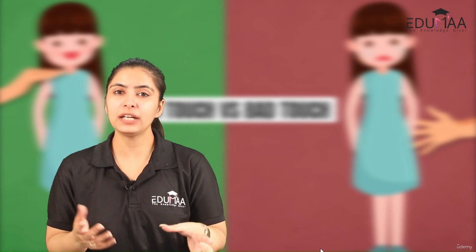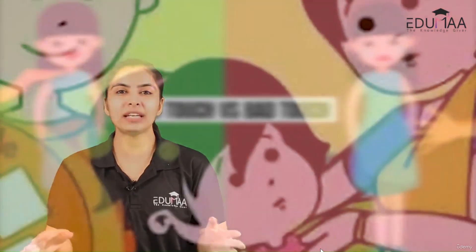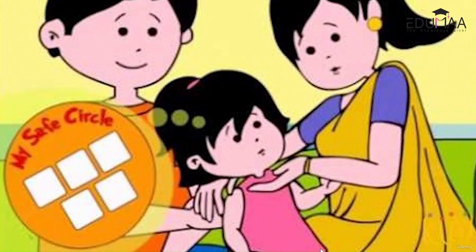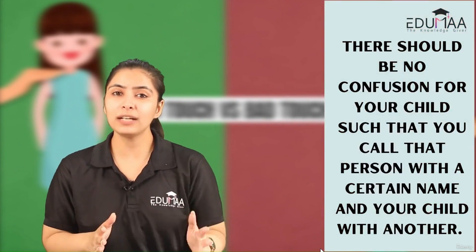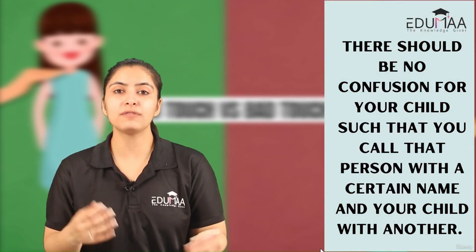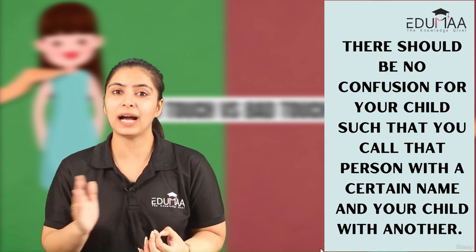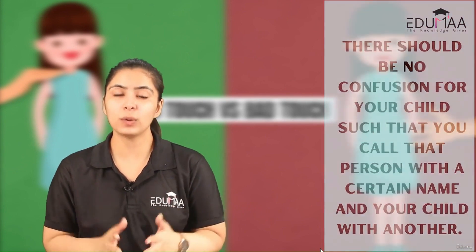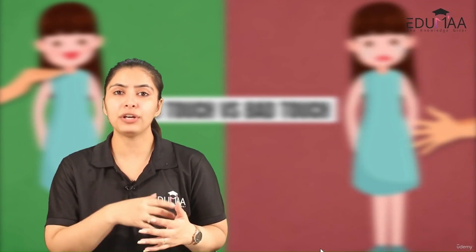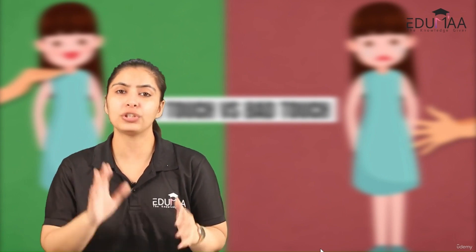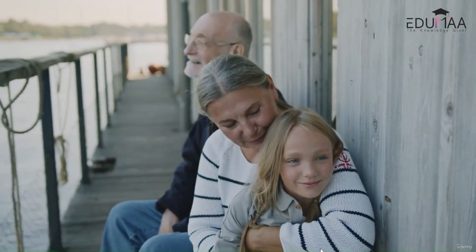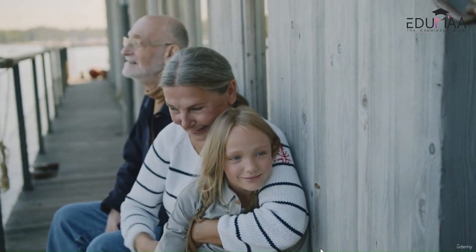You can get that printed or even make a chart out of it. You can create a page or simply write them down on a piece of paper where your child can write the names themselves and also paste the pictures. It's important for your children to know who that person is — if you call that person with a certain name and your child doesn't know that name, it will be confusing for them. Write the particular name your child is comfortable with and paste the picture so your child recognizes that person by name.